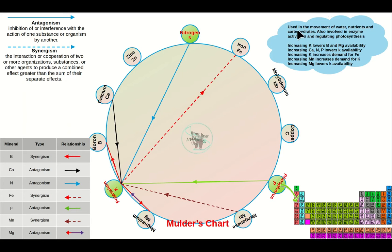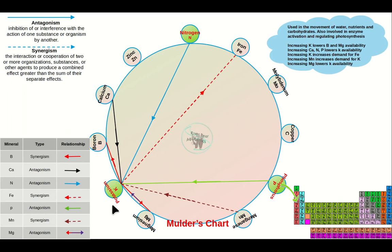Potassium, number 19 on the periodic table, is a busy one. It is used in the movement of water, nutrients, and carbohydrates, and is involved in enzyme activation and regulation of photosynthesis. Increasing potassium lowers the amount of boron and can affect magnesium's availability. Increasing calcium, nitrogen, or phosphorus lowers available potassium. Increasing potassium creates demand for iron, and increasing manganese creates demand for potassium.